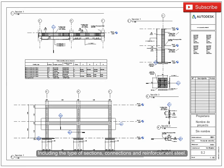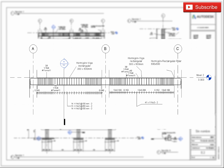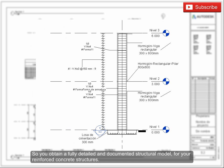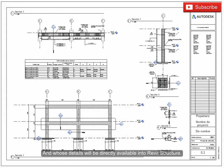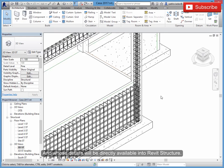This includes the type of sections, connections, and reinforcement steel, so you obtain a fully detailed and documented structural model for your reinforced concrete structures, whose details will be directly available in Revit Structure.